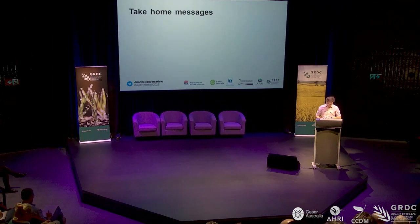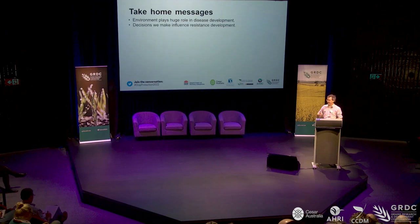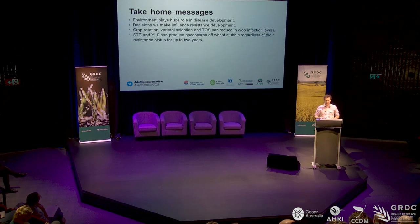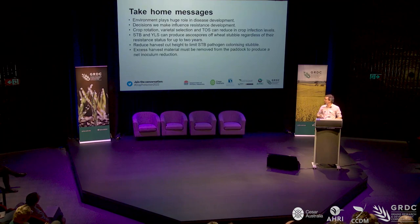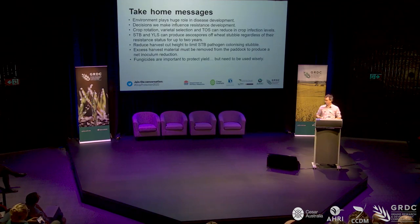Now the take-home messages. Environment plays a huge role in disease development — that's unavoidable, and each year will be different depending on climatic conditions — but the decisions we make influence resistance development. Crop rotation, varietal selection, and time of sowing can reduce in-crop infection levels. STB and yellow leaf spot can produce ascospores from stubble for up to two years regardless of their resistance rating. Reduced harvest cut height can limit STB inoculation of stubble, but harvested material must be removed from the paddock to reduce the inoculum load. Fungicides are important to protect yield, but we must use them wisely and implement an IDM approach.